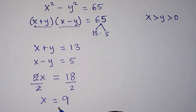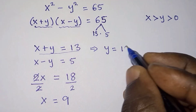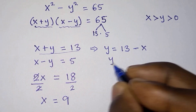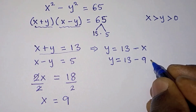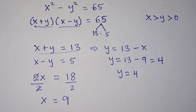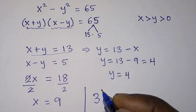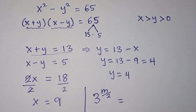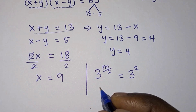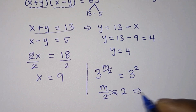Now we know x = 9. To find y, from x + y = 13 we get y = 13 - 9 = 4. But remember, we are looking for m. Since x = 3^(m/2) and x = 9, we have 3^(m/2) = 9 = 3^2. Since the bases are the same, m/2 = 2, so m = 4.